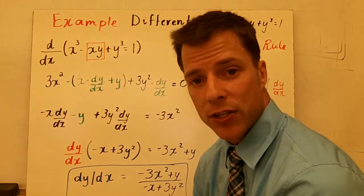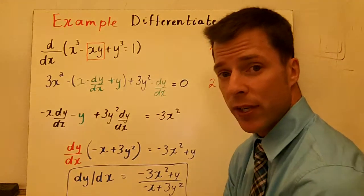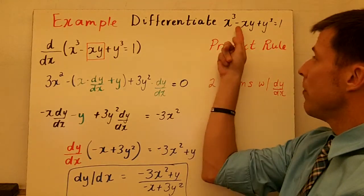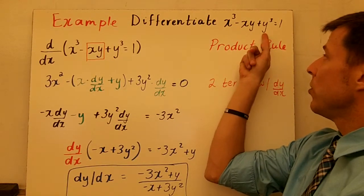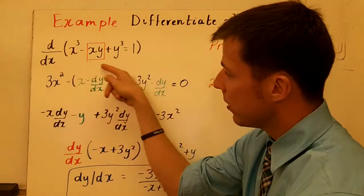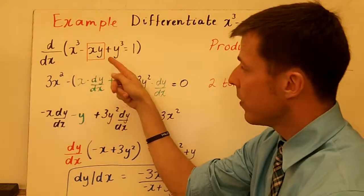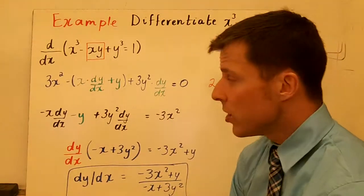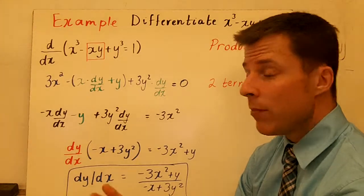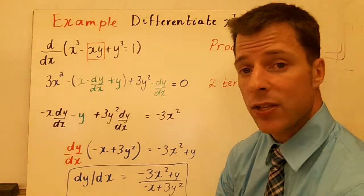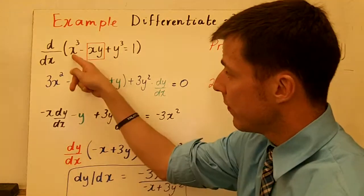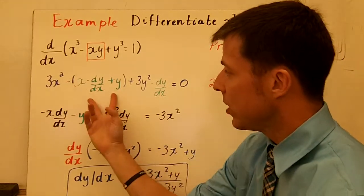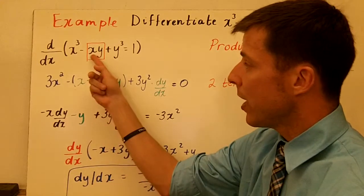We're going to get into some more challenging problems. Particularly, when you look at differentiating x cubed minus xy plus y cubed equals 1. I rewrote the derivative here — I'm going to take the derivative, and notice I boxed xy in red. That's the product rule inside here, so that gets really tricky because you're going to have this minus sign. The derivative of x cubed is 3x squared, minus the quantity in green, which is the derivative of that product rule.